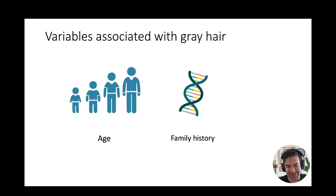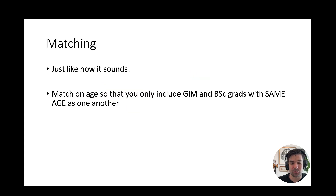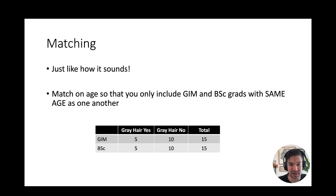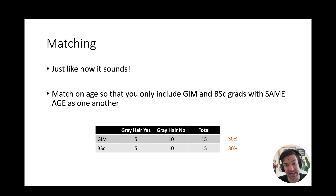Obviously there's more to it. We should think about what variables are associated with gray hair — probably age, and maybe family history if your parents had gray hair at a young age. Matching works just like it sounds. In the toy example, we matched on age, so we only included GIM grads and BSc grads of the same age. Our sample size shrinks because there might not always be a match. After matching on age, the risk of gray hair is the same — 30% — suggesting age was the confounder and we've now controlled for it.